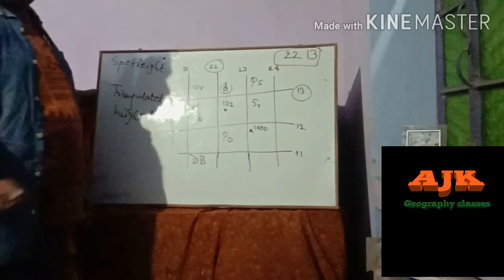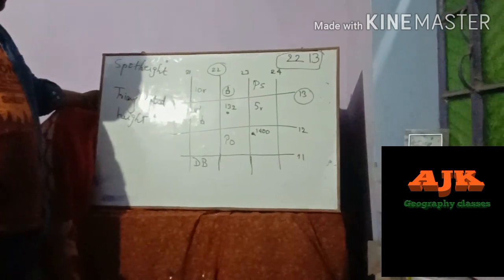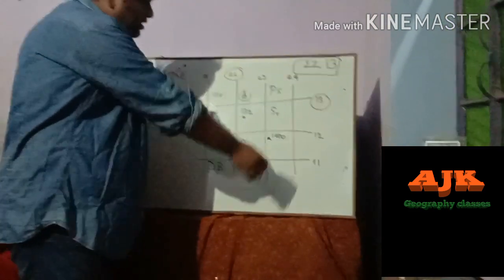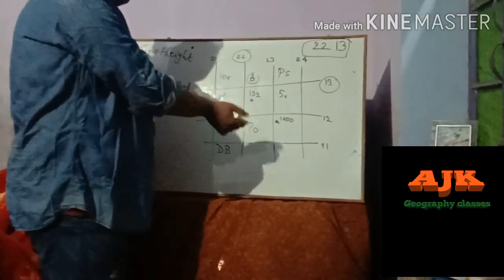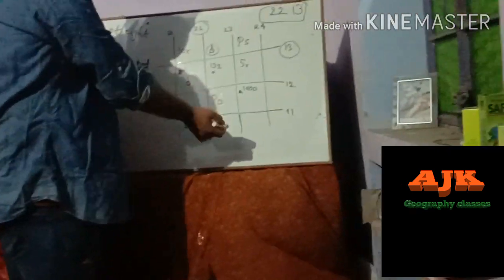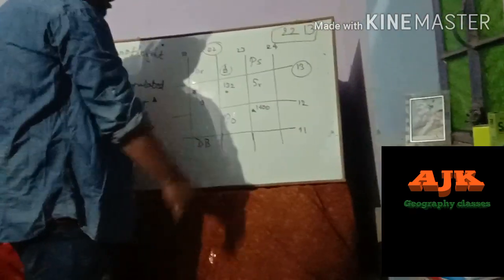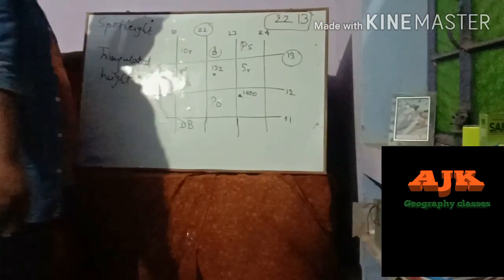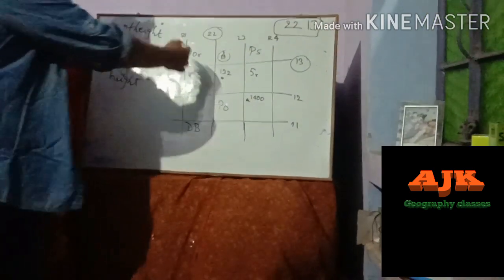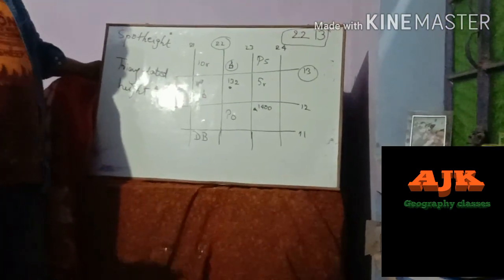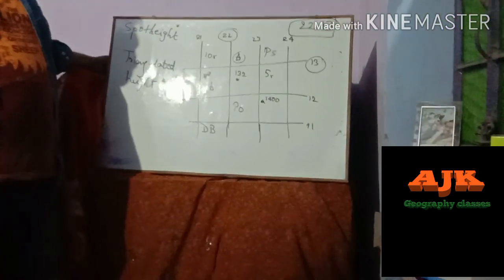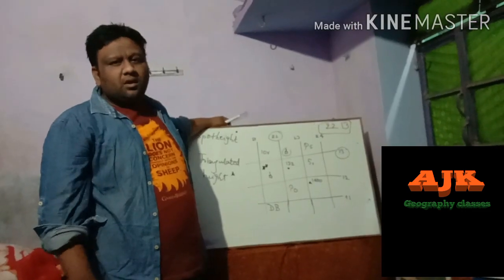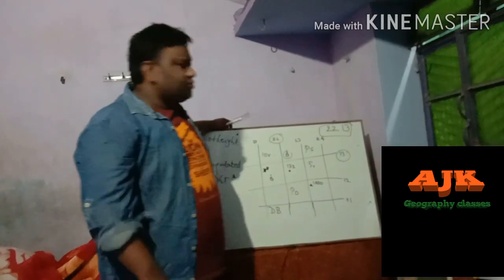I hope you understood what is four-figure. Here's a small exercise: find out the four-figure of the police station, this triangulation point, the post office, the dak bungalow, the settlements, and so many other structures you'll find on the map. I hope you understood how to calculate four-figure — it is a piece of cake.